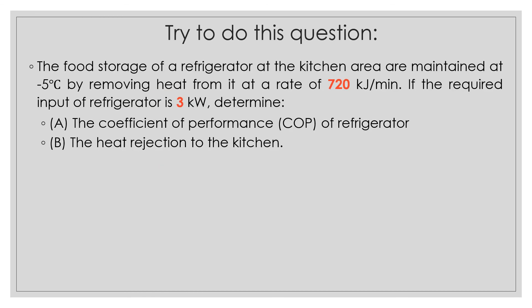This is the question more or less the same like the previous one. It's just a matter of changing some of the parameters. I hope you guys can answer this question. I also provide the final answer for each question. For A, COP_R equal to 4, and B, Q_H equal to 900 kJ per minute.